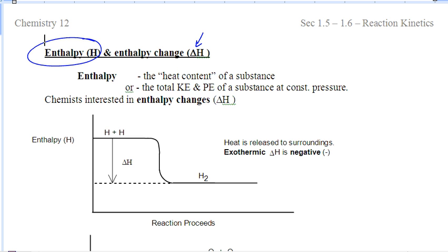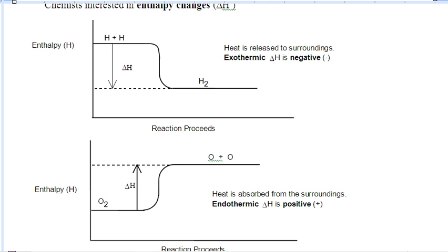So if you're exothermic, you're losing or gaining energy. And your delta H will be positive or negative.